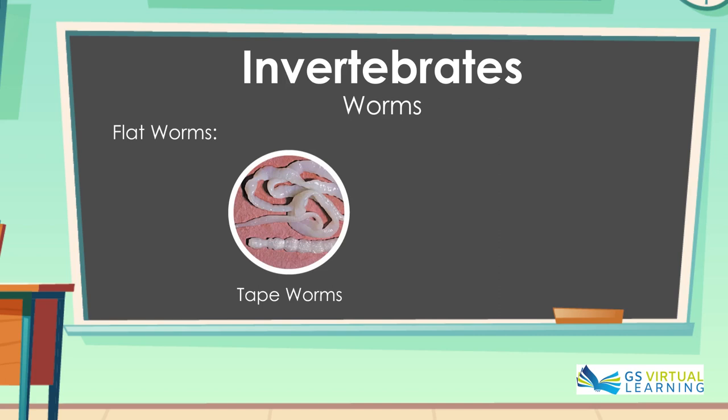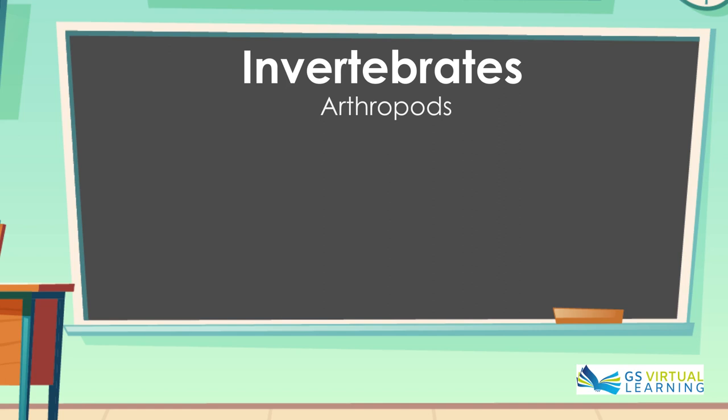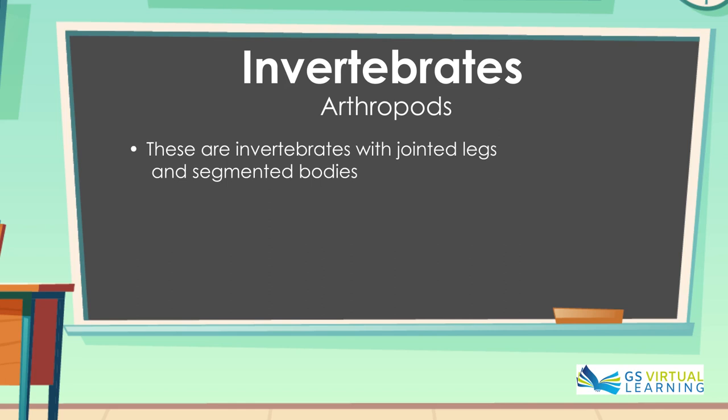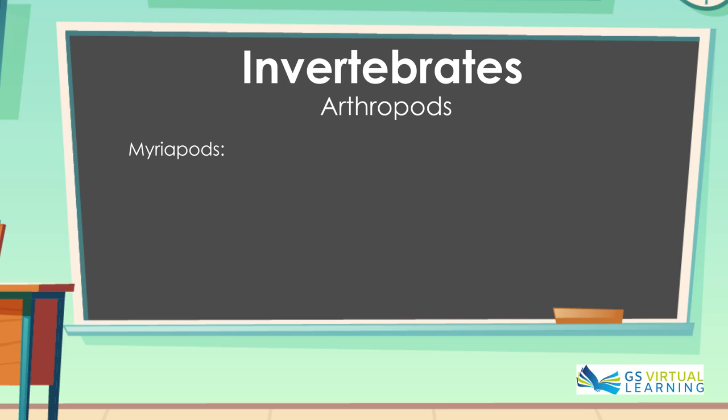The sixth group of invertebrates are the Arthropods. These are invertebrates with jointed legs and segmented bodies. Arthropods are subdivided into Myriapods, such as Millipedes and Centipedes; and Arachnids, such as Ticks, Scorpions and Spiders.